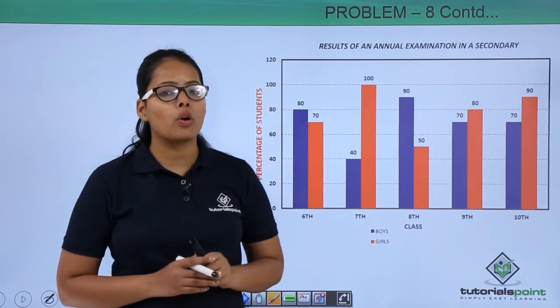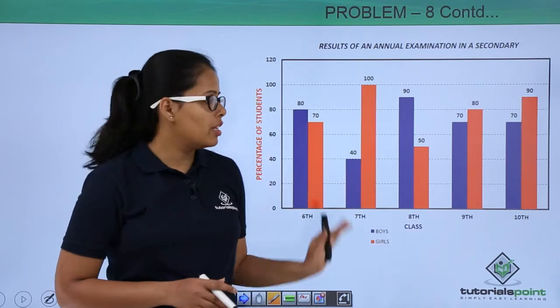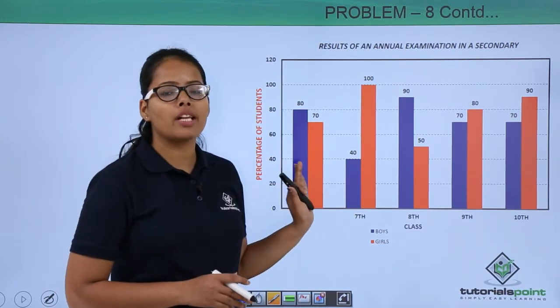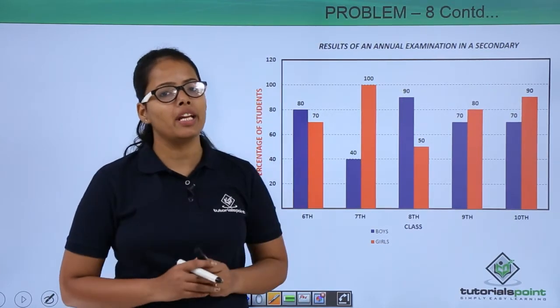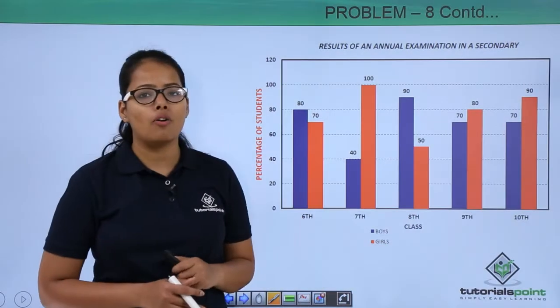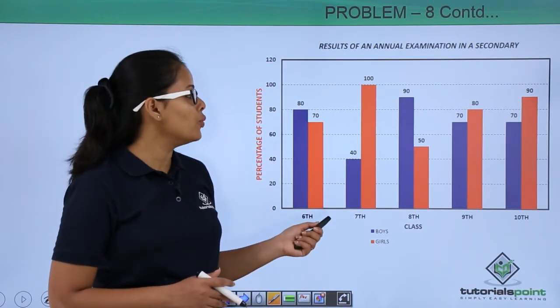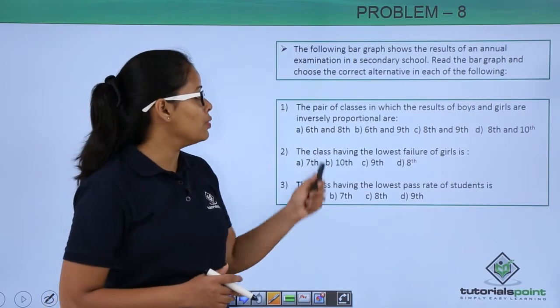Now you understand what this bar graph is about. This bar graph is about the number of boys and girls passed in corresponding classes. From this bar graph we are going to answer these problems.